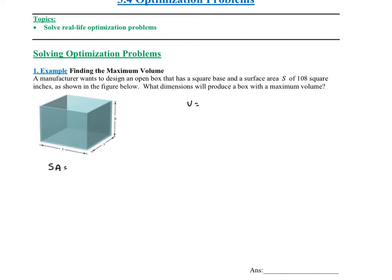If I look at the volume of the box, it's length times width times height, so in this case it would be x times x times h, which is x squared h. The idea is we want to maximize the volume, so we're going to be taking the derivative of the volume function and finding its critical values. The current problem is this has two variables.